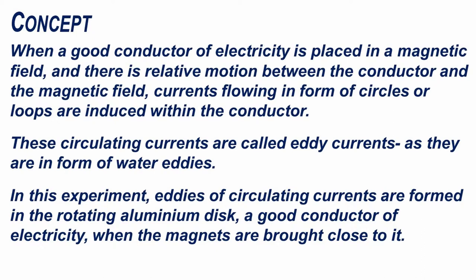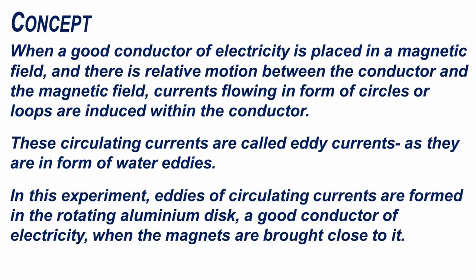In this experiment, eddies of circulating currents are formed in the rotating aluminium disc, a good conductor of electricity, when the magnets are brought close to it. These eddies of circulating current generate their own electromagnetic field.